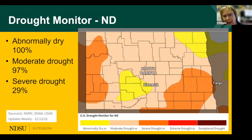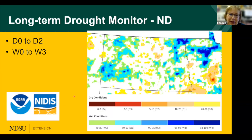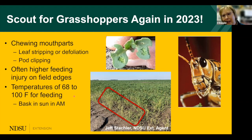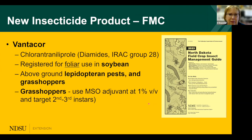Drought is still present — we're still abnormally dry to severe drought in some areas, though the long-term drought monitor indicates very few drought areas with more rainfall shown in green and blue. Despite that, we're still likely to see grasshoppers again. They often move into field edges first when in the nymph stage. Last year, most grasshoppers were higher in the western part of the state, with some hot spots. Be proactive if they're at threshold.